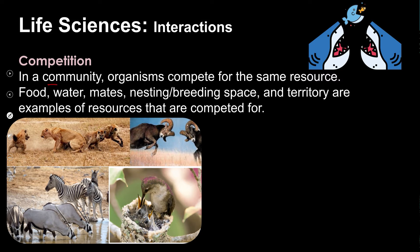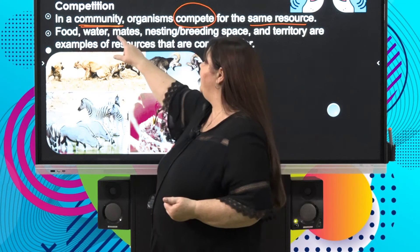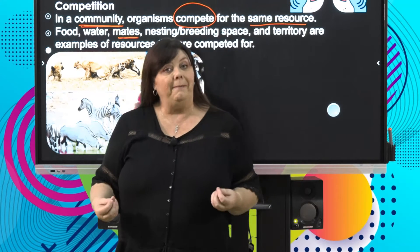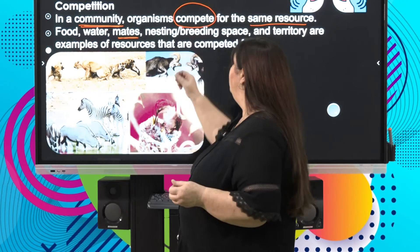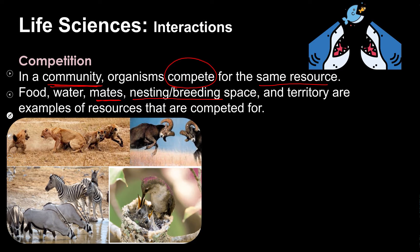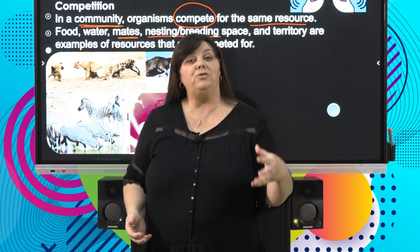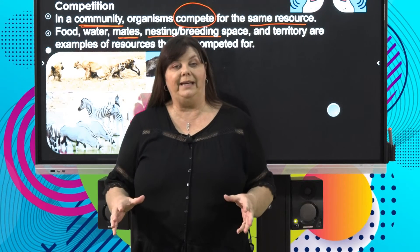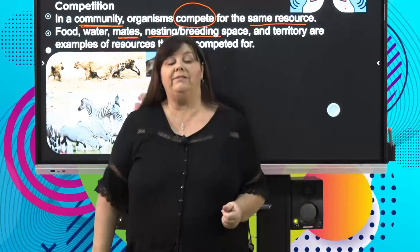In a community — and I want to stress we're talking not only about one population, but different populations interacting — organisms compete for the same resources: food, water, or within a population, mates. Organisms also compete for nesting or breeding sites — well-sheltered areas in the ecosystem conducive for laying eggs, bringing up young, or birthing young. Those spaces in the environment are competed for. Territory is also important — members of a population compete for and defend a particular space.